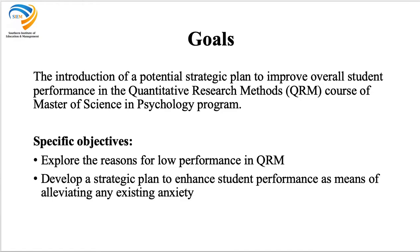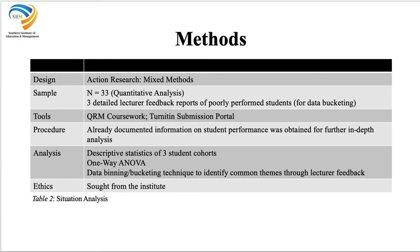There are two specific objectives: the first is exploring the reasons for low performance in QRM, and the second is to develop a strategic plan. We adopted the action research design, which has elements of both quantitative and qualitative research, making it a mixed methods study. We obtained a sample of 33 students for the quantitative analysis and then obtained three detailed lecturer feedback reports of poorly performed students from the last cohort — for identifying major themes in the lecturer feedback to determine where exactly students scored low.